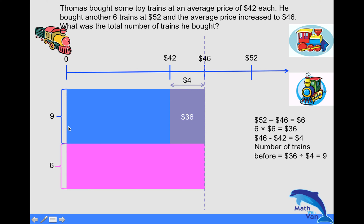So before there were nine trains, plus he bought six more, so in the end the total number of trains will be 15.